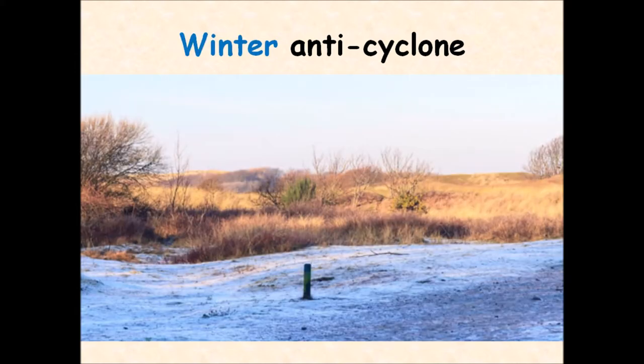Whereas in a winter anticyclone, we still have clear skies and typical sunny weather conditions, but it is relatively cold. Again, there's no clouds formed because that air is descending. We don't get any form of precipitation, rain, hail, sleet or snow. This is because warm air can hold more moisture overall than cold air, so we have no condensation or cloud formation taking place.